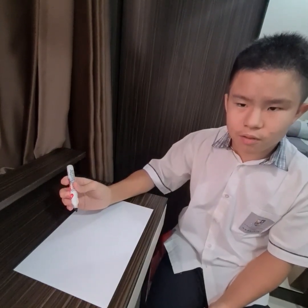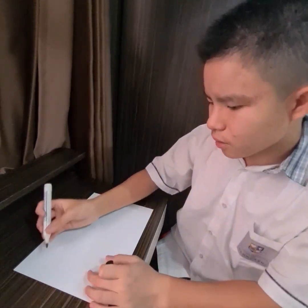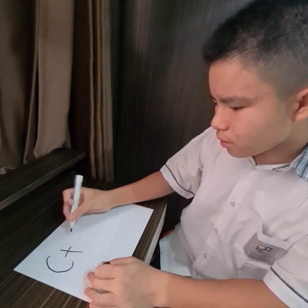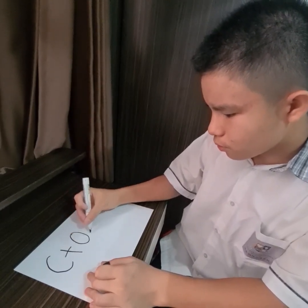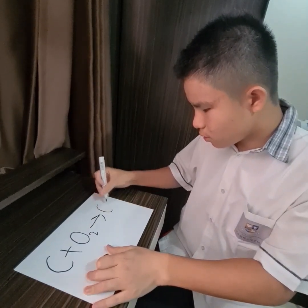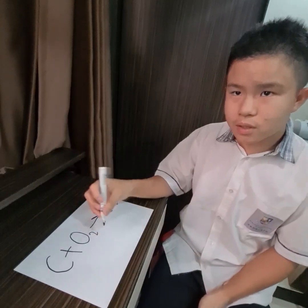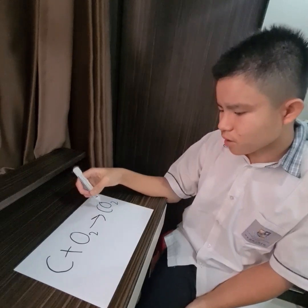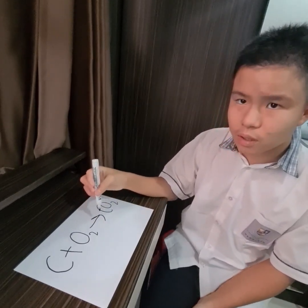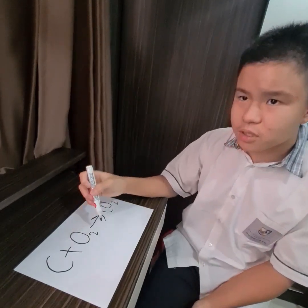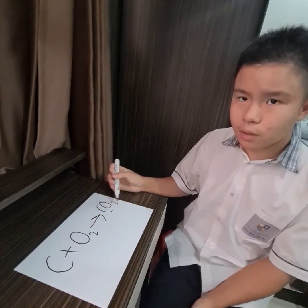Next I will discuss about stoichiometry relationship in the formation of CO2. Here is the chemical reaction for it. Carbon reacts with O2, which is oxygen, to produce CO2. This is already a balanced chemical equation, with one carbon atom on the left and right and two oxygen atoms on both sides.